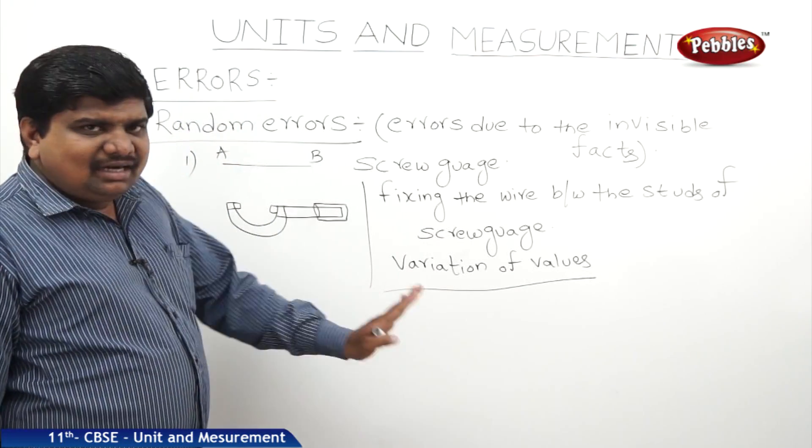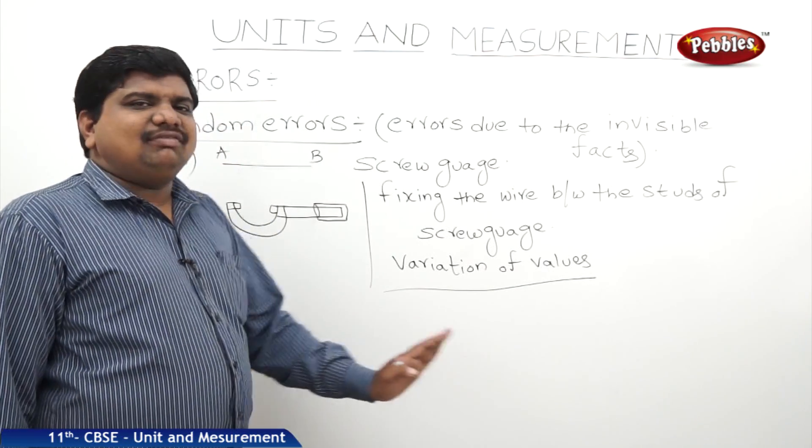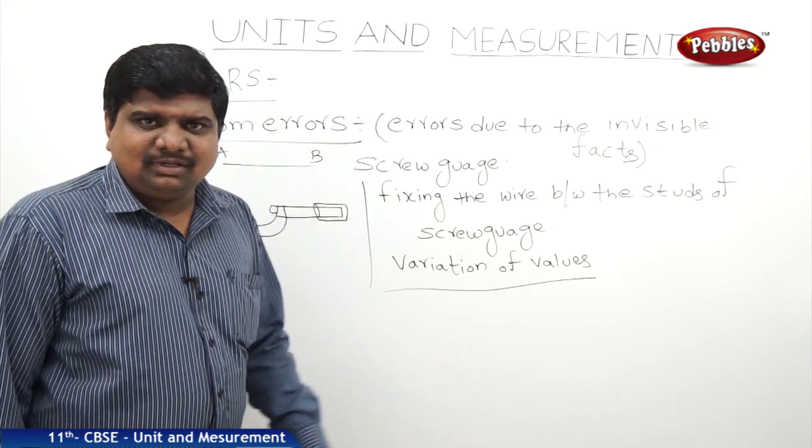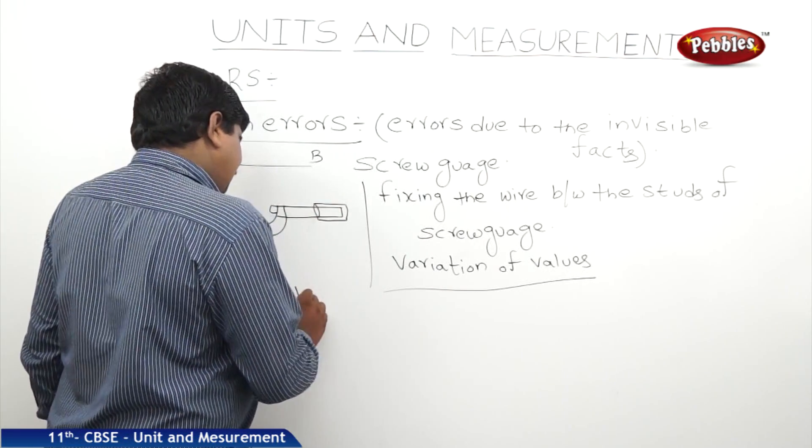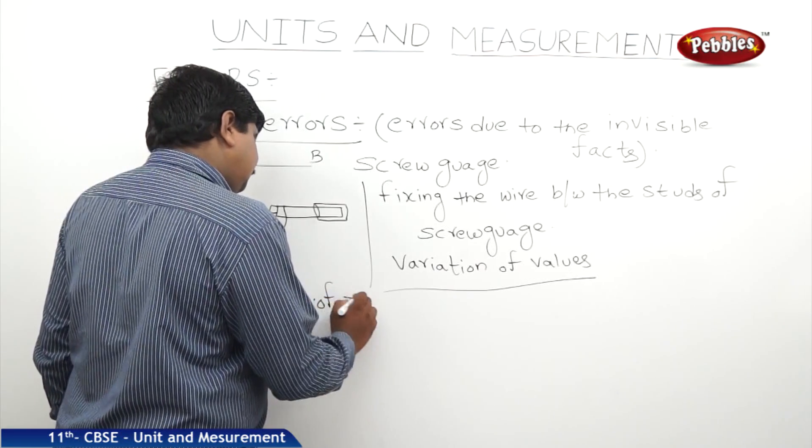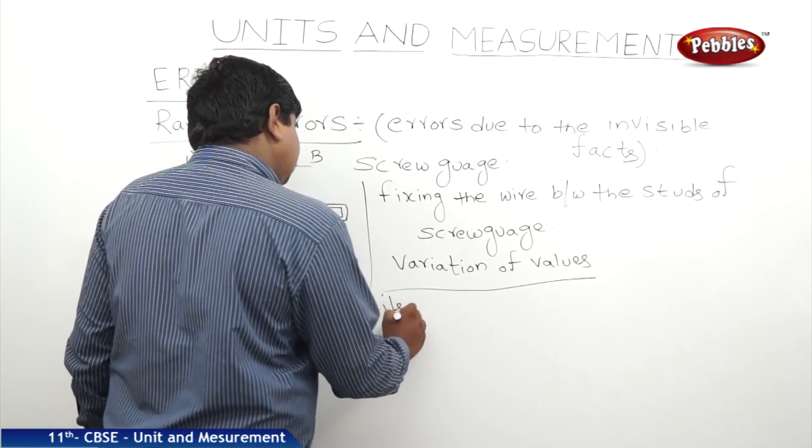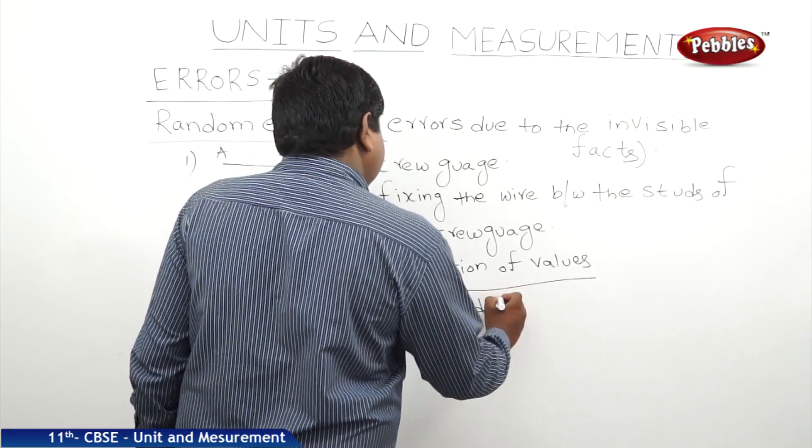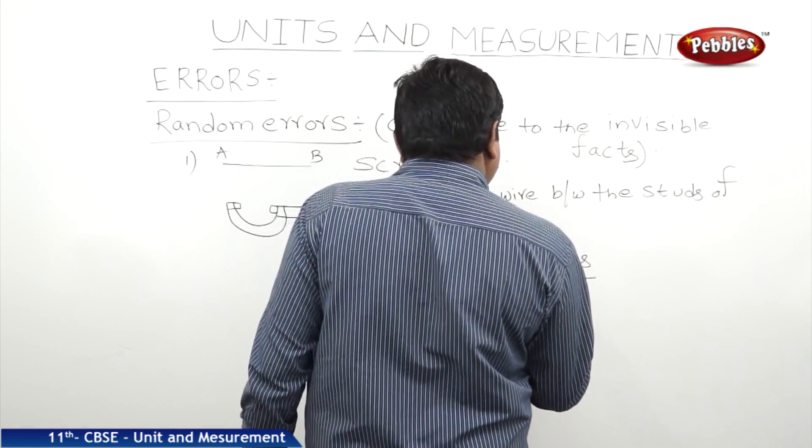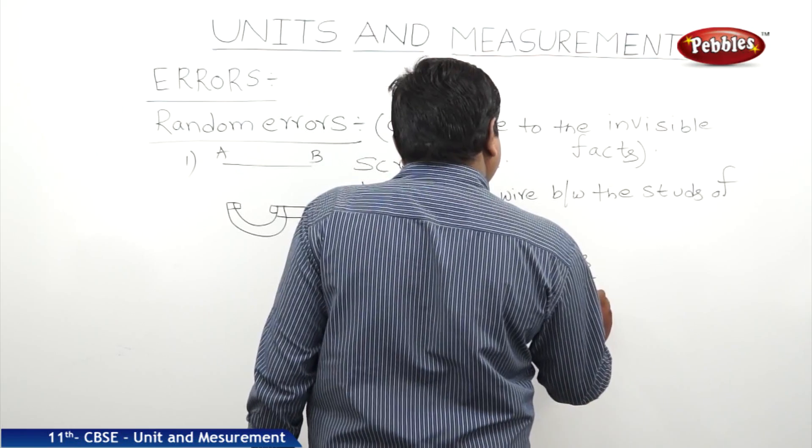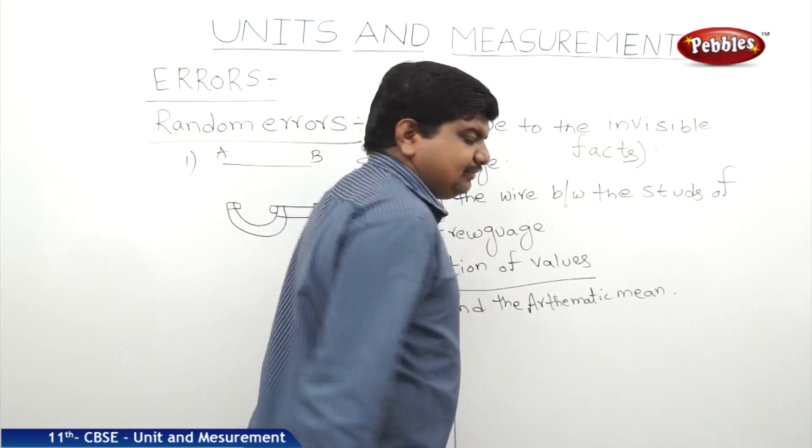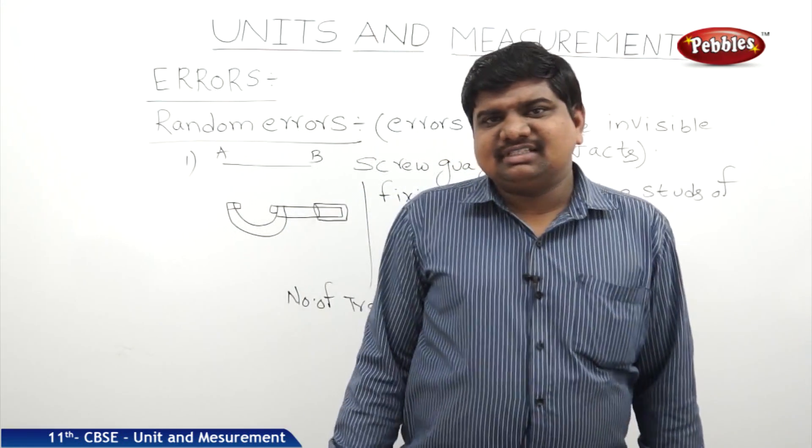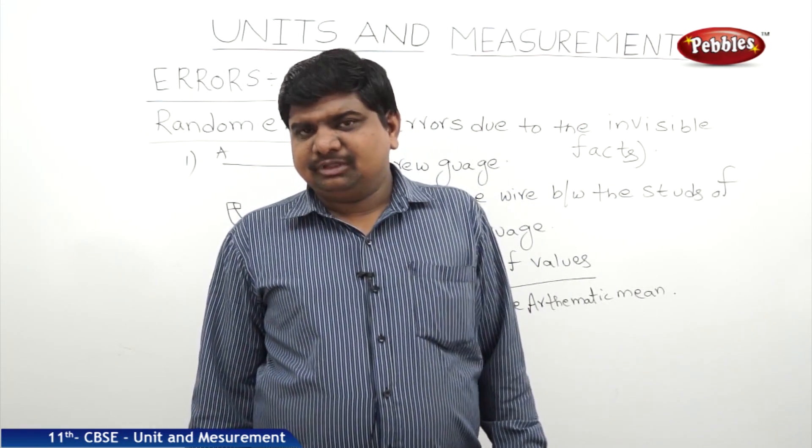What is the way to eliminate this error? Take n number of trials, whatever is possible, and find the arithmetic mean of it. Number of trials, and find the arithmetic mean, AAM. Nothing but the average of those values, sum of the observations by number of observations. Like this, we can eliminate these random errors.